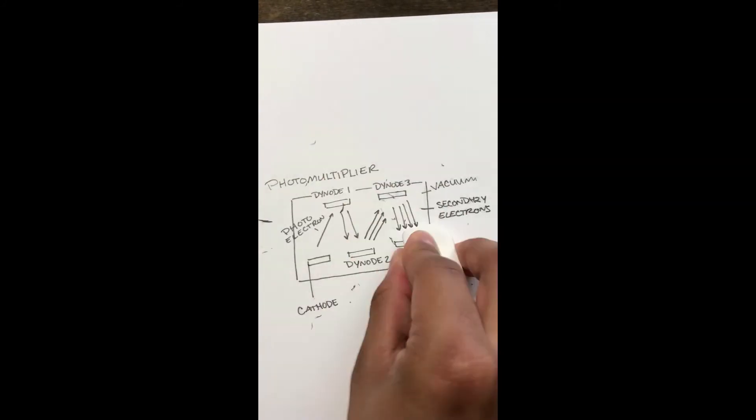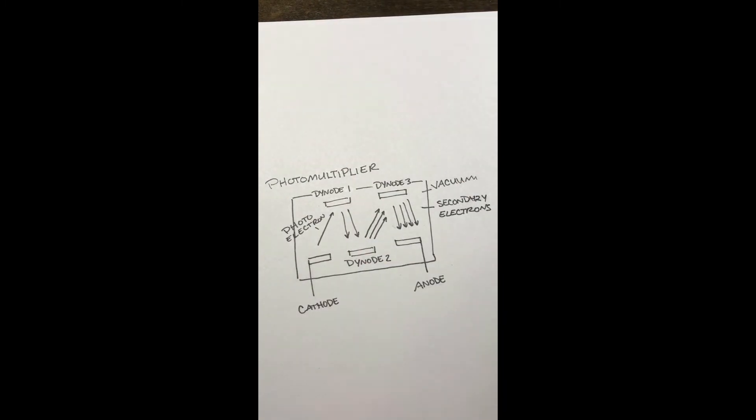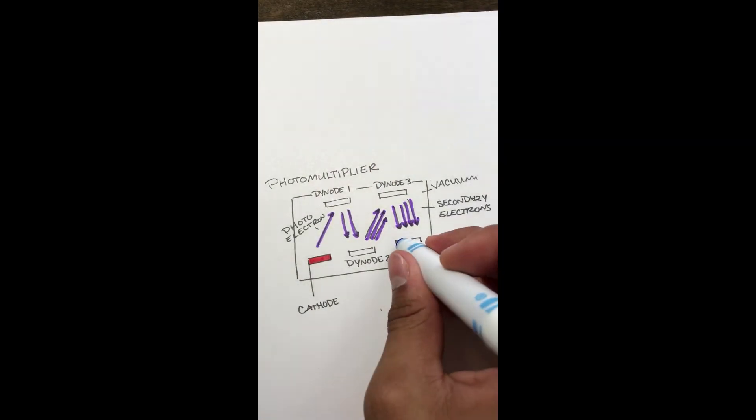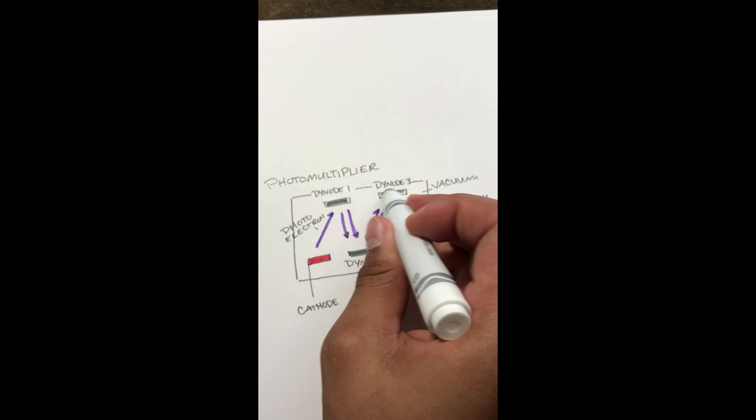The high gain process gives photomultipliers the best responsivity when looking at ultraviolet, visible, and near-infrared parts of the electromagnetic spectrum, but not past wavelengths of one thousand one hundred nanometers. These are commonly used in confocal microscopes and spectrometers.